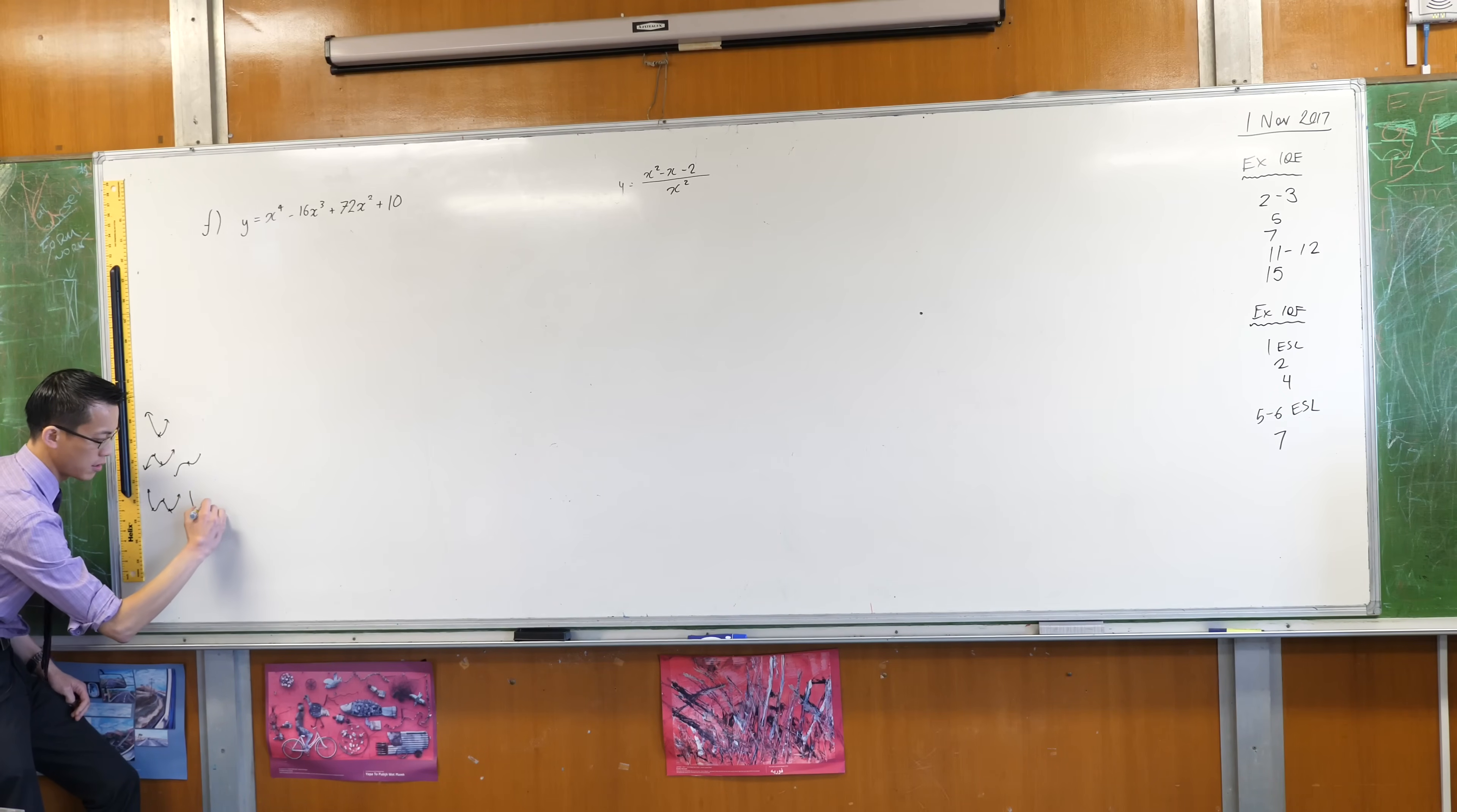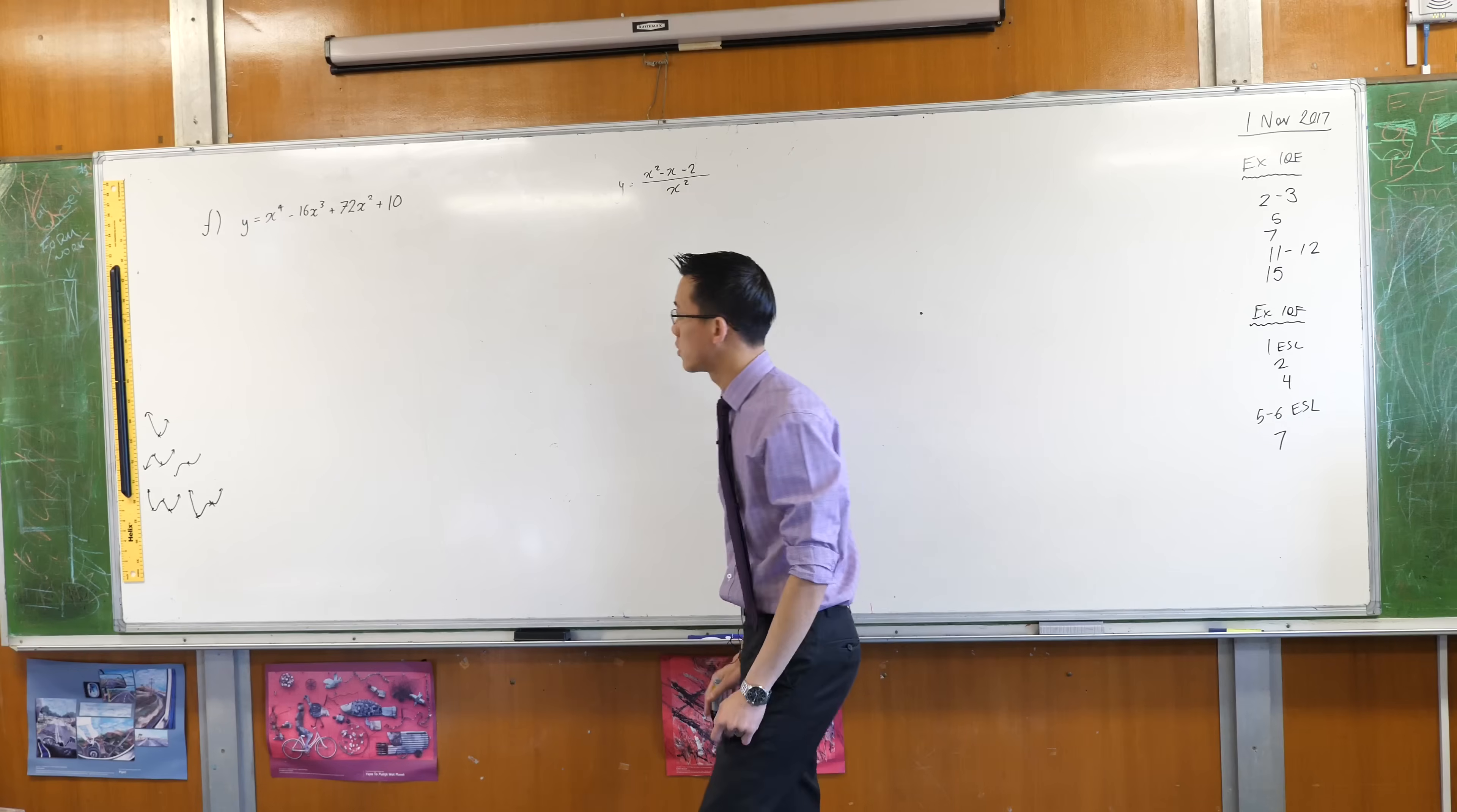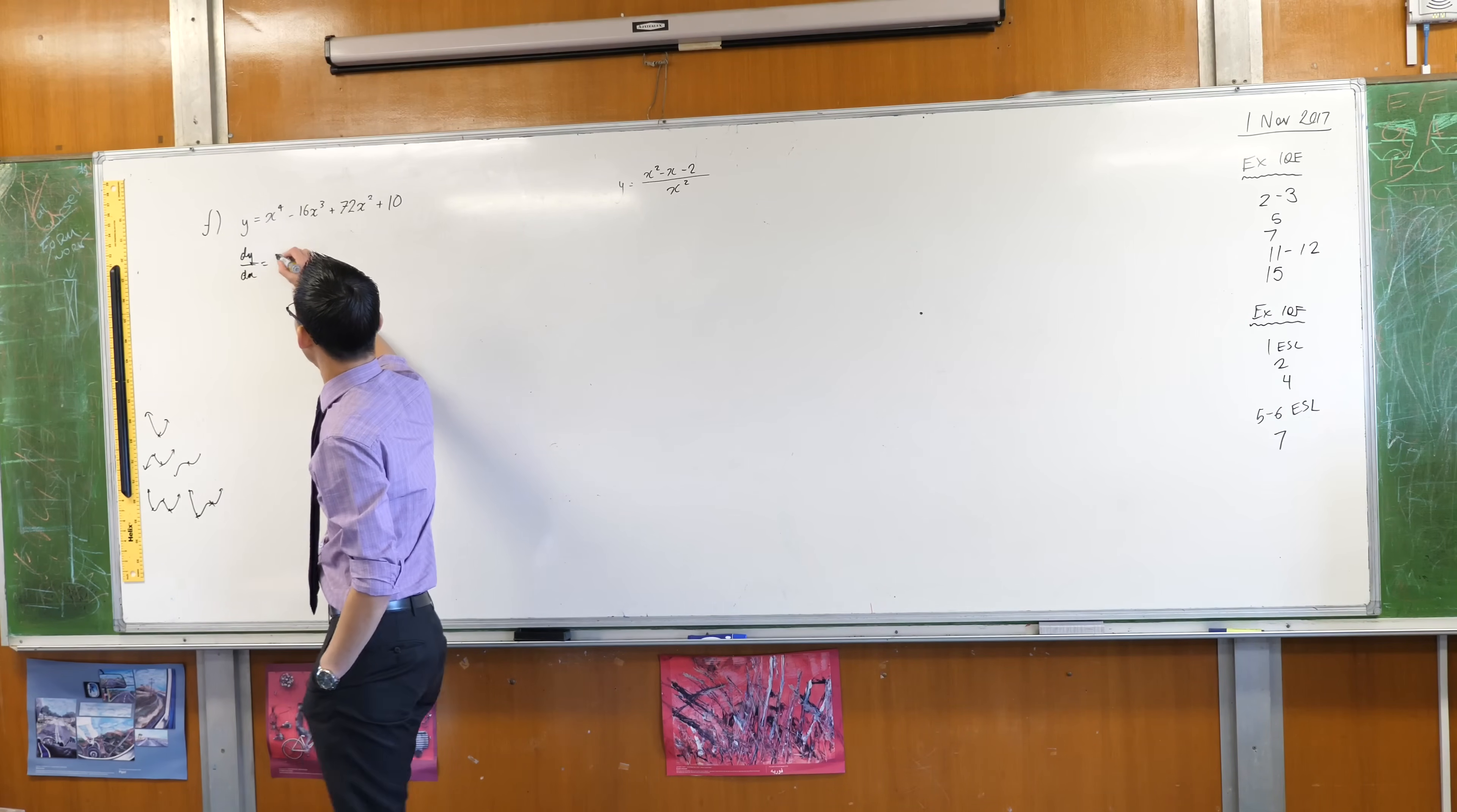You can have combinations. For example, you can have one that looks like this, so you can have a stationary point there and then you have a horizontal point of inflection there. So we have different combinations, so we'll find out once we start to get to work.